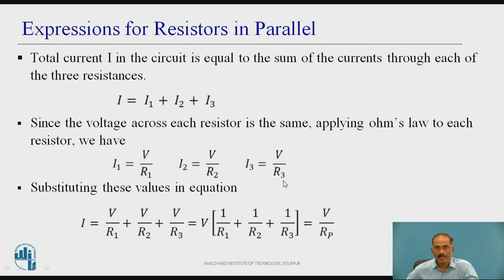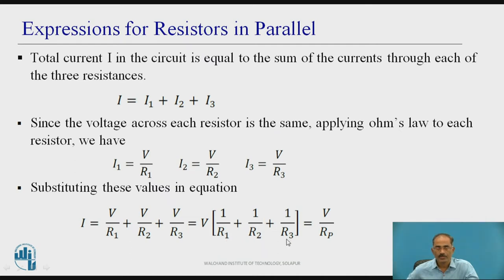Similarly, I3 = V / R3. If I substitute I1, I2 and I3 in the main current I, then I = V/R1 + V/R2 + V/R3. Taking V common, this equals V × (1/R1 + 1/R2 + 1/R3). This is also equal to V / Rp.